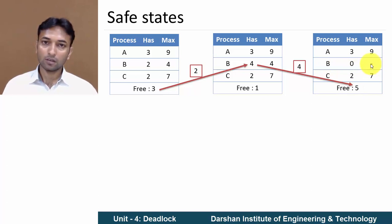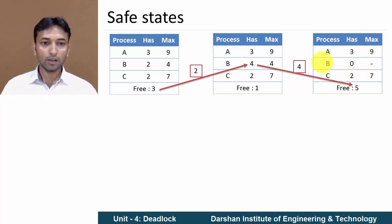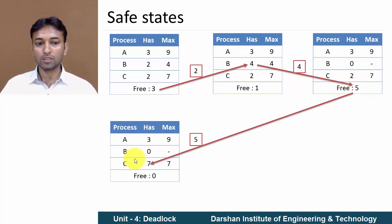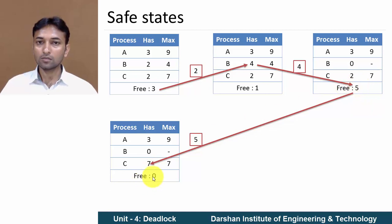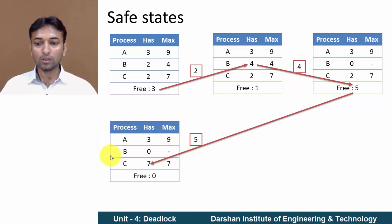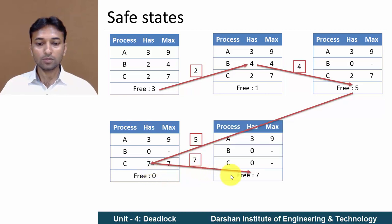Now process A requires 6 resources and process C requires 5. Since 5 resources are available, the next turn is for process C. These 5 resources are allocated to C, giving it 5+2=7 total, and free resources become 0. Process C completes its execution. Once C finishes, all 7 resources become free, so free resources become 7.